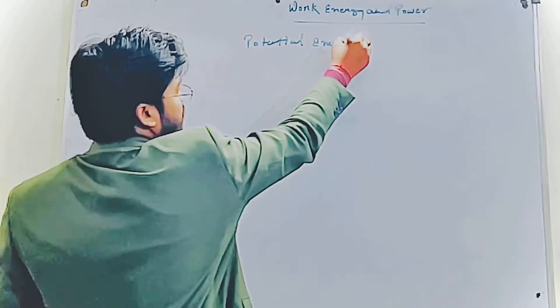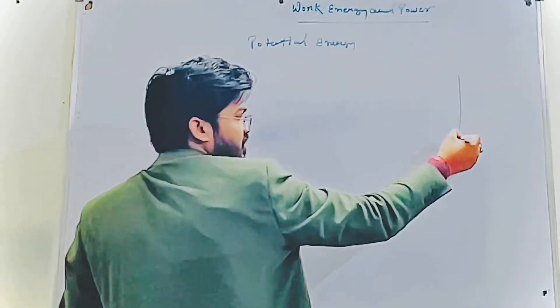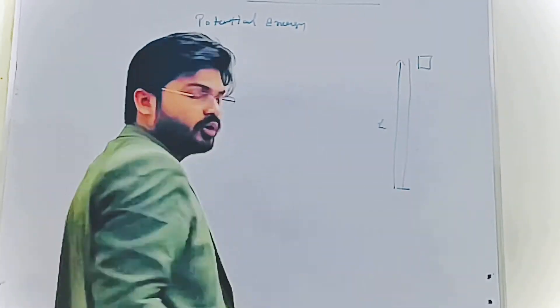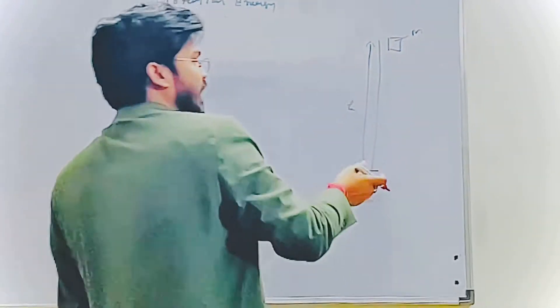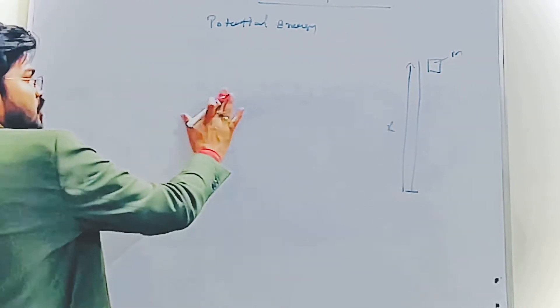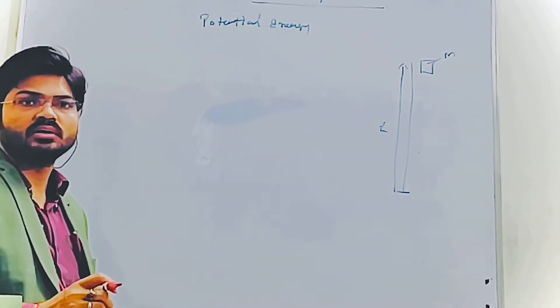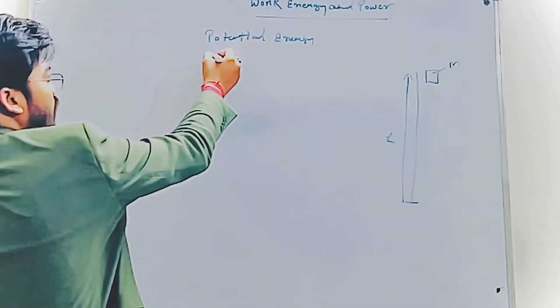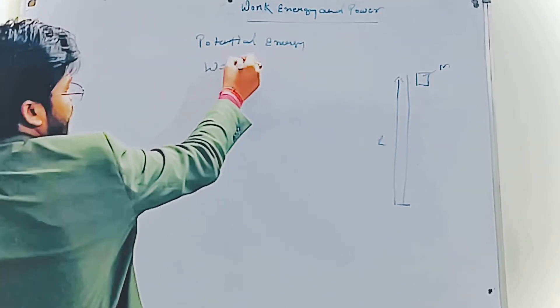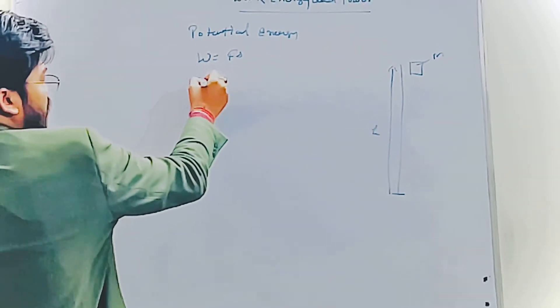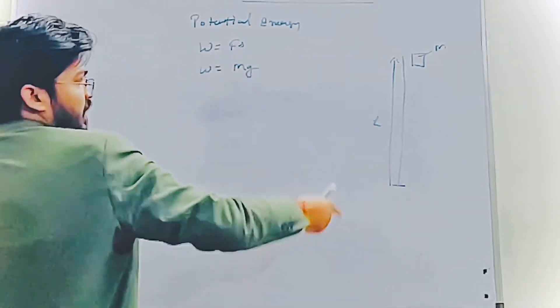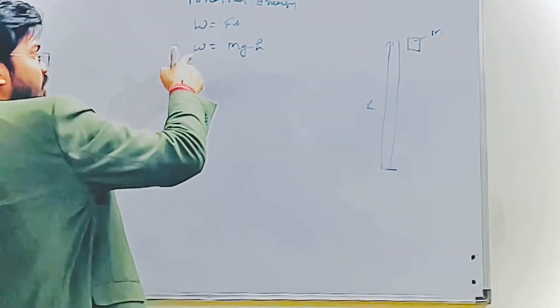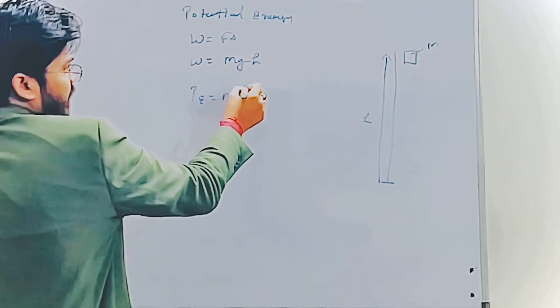For potential energy, let's consider an object placed at a height h which has mass m. The capacity of doing work is known as energy. So W equals FS. W equals F which is mg because here we're talking about gravity and height. And S here is height h. So W equals PE equals mgh, as proved.